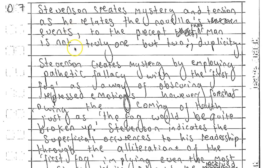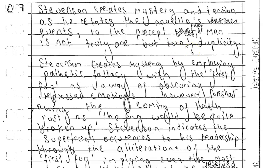Now let's look at the opening of the Jekyll and Hyde answer: 'Stevenson creates mystery and tension as he relates the novella's events to the preset that man is not truly one but two; duplicity.' This isn't quite as sophisticated, but it still has key elements — he goes straight in with Stevenson's purpose, linking it to a quotation and to one theme: duplicity. These are two key skills he keeps demonstrating.